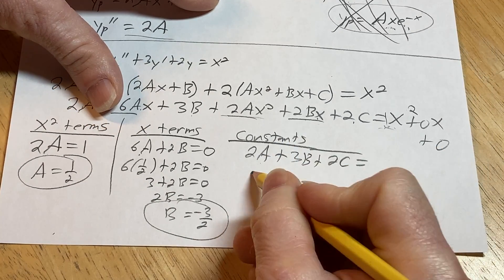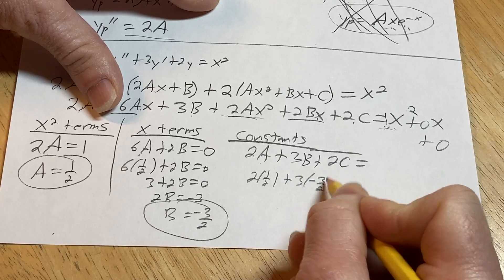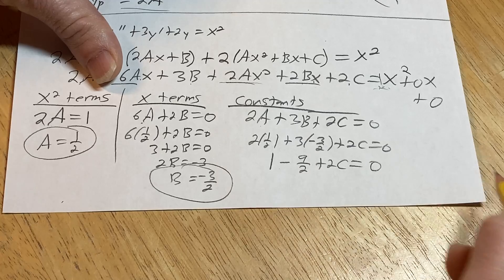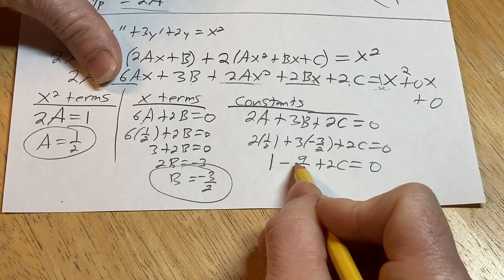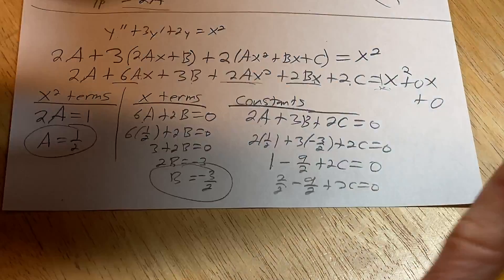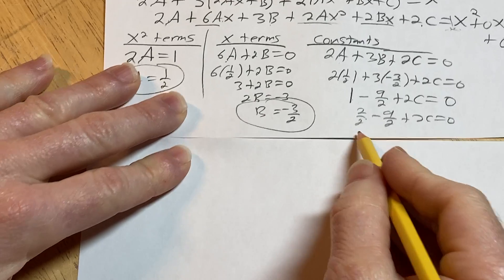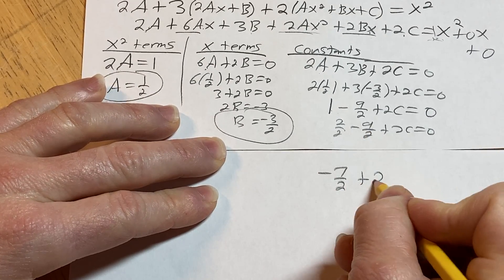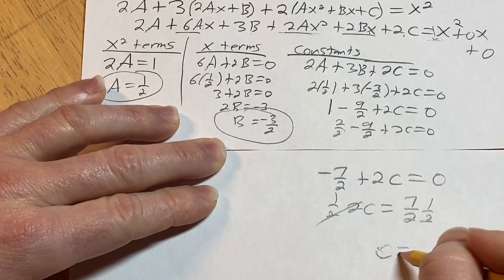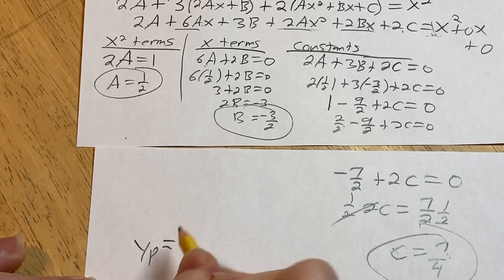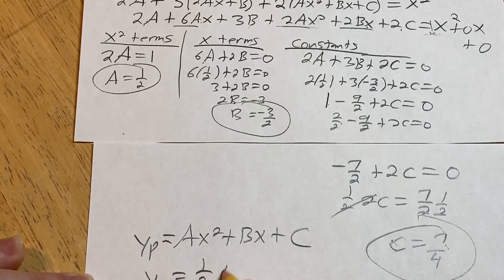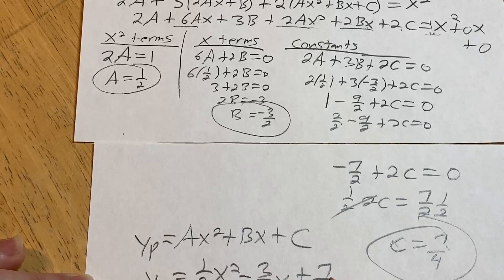For the constant terms: 2a plus 3b plus 2c equals 0. Substituting a equals 1/2 and b equals negative 3/2: 2(1/2) plus 3(negative 3/2) plus 2c equals 0, which is 1 minus 9/2 plus 2c equals 0. That's 2/2 minus 9/2 equals negative 7/2, so 2c equals 7/2 and c equals 7/4. Therefore y sub p equals (1/2)x squared minus (3/2)x plus 7/4.